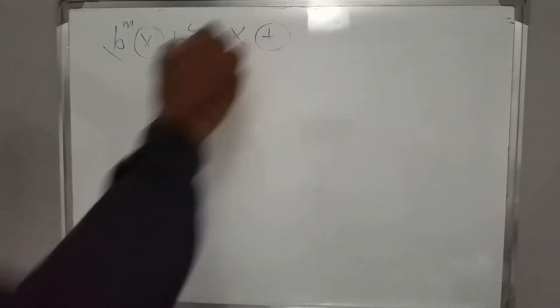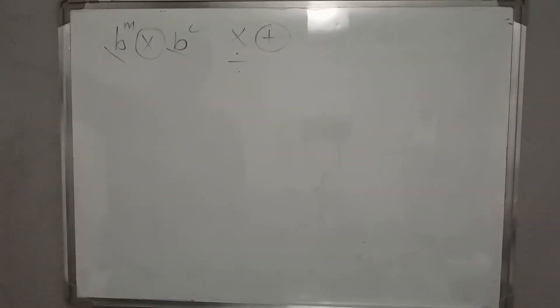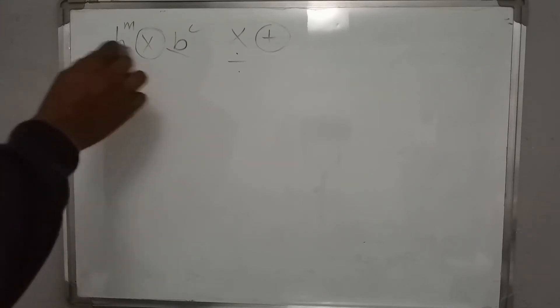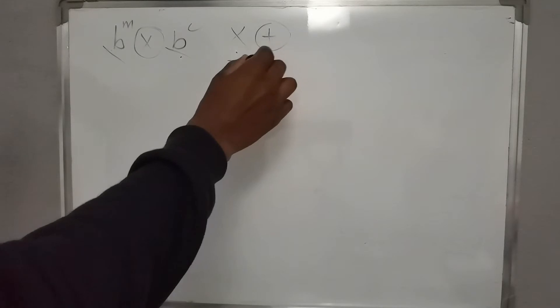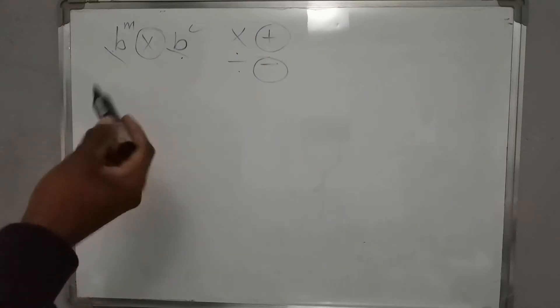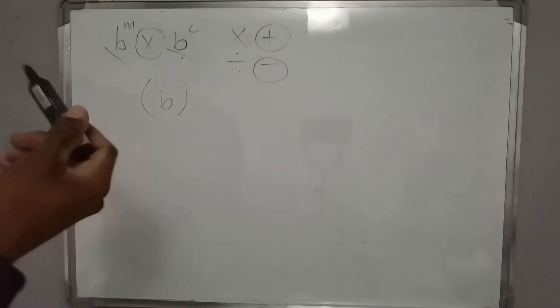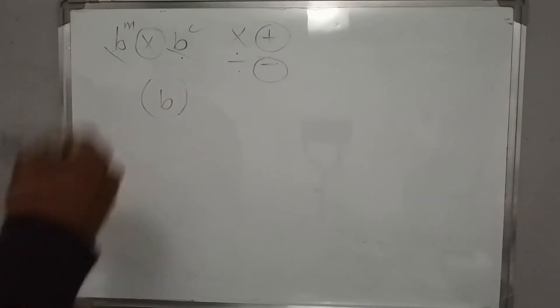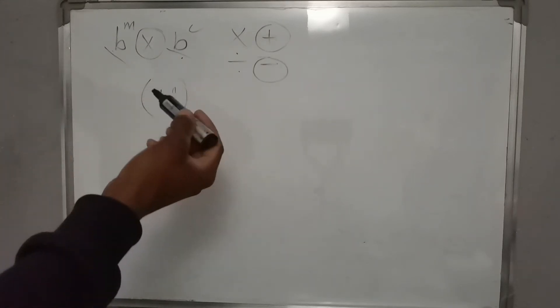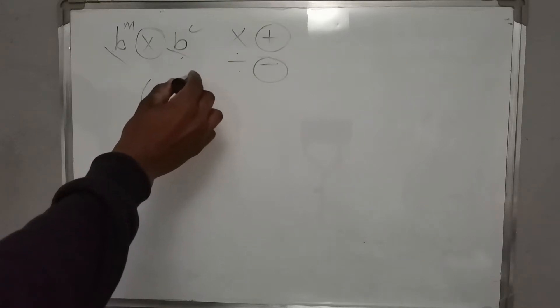When we multiply and the bases are equal, we will add the exponents. When we divide and the bases are equal, we will subtract the exponents. We also look at the situation where a base is enclosed in parentheses or brackets and has an exponent outside.